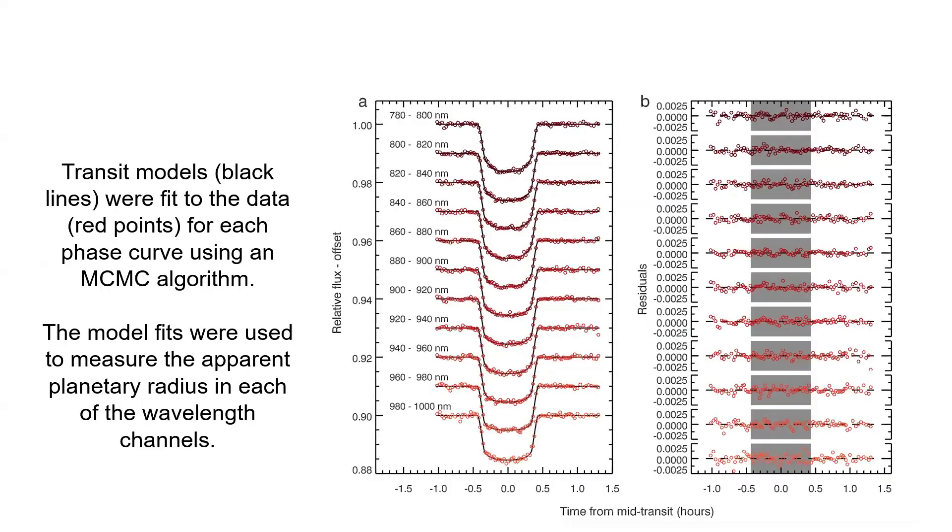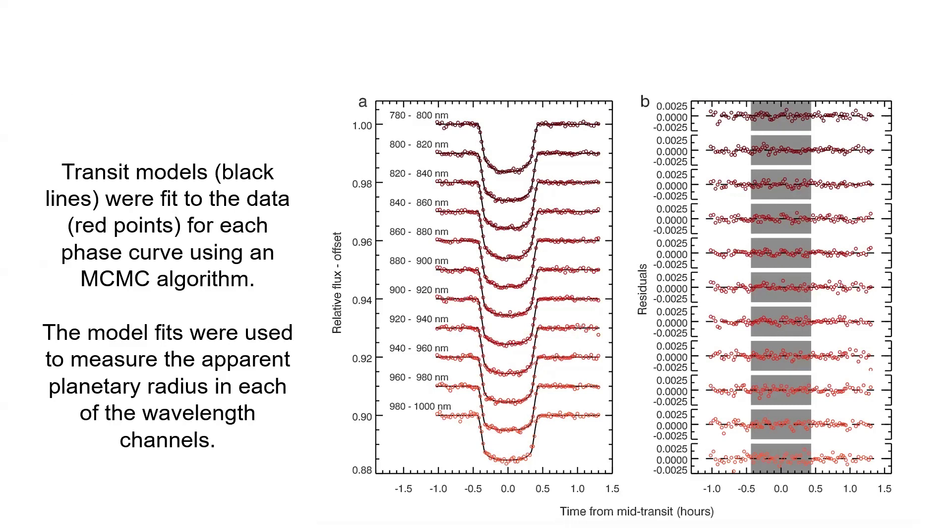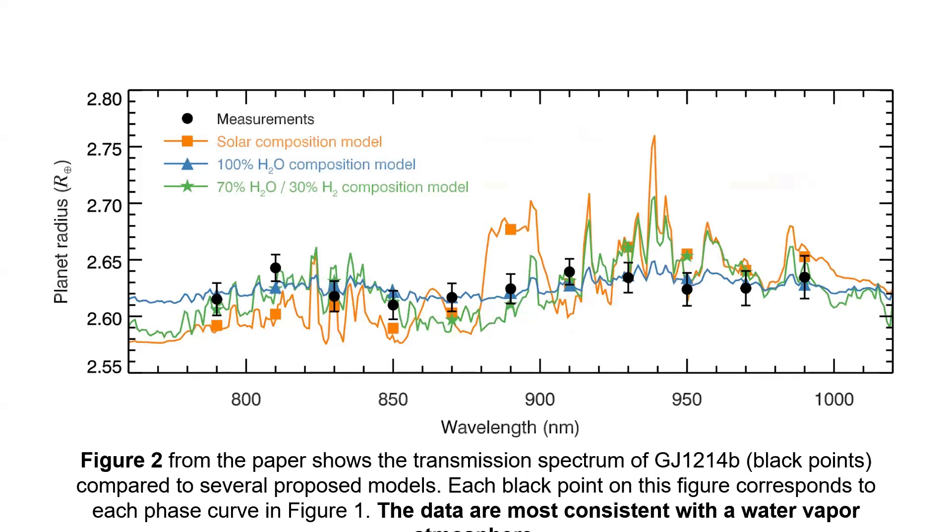The combined fluxes of the reference stars were divided out of the light curves to correct for Earth's atmosphere and any variations that Earth's atmosphere went through during that time. Because again, these are ground-based observations. And the resulting corrected and normalized phase curves are what's shown here. The transit models, which are shown as the black lines here were fit to the data for each phase curve. The right side shows the residuals. Basically the flatter the residuals, the better the model fits to the data. So these are looking like pretty flat lines on the right here. That's good news for our scientists. The model fits were used to measure the apparent planetary radius in each of the wavelength channels. So at these different wavelengths, what does it look like the radius of the planet is? And does that apparent radius change over the different wavelengths?